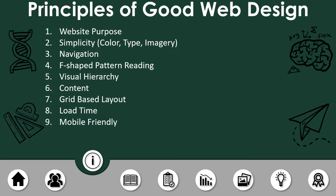The next principle is F-shaped pattern reading, which is currently in trend. You should make menus that are aligned vertically and contents aligned horizontally. For example, websites like Facebook, YouTube, TikTok, Instagram, and Twitter have menus aligned vertically to the left, and the contents are seen aligned horizontally — either to the center or to the larger part of the monitor.